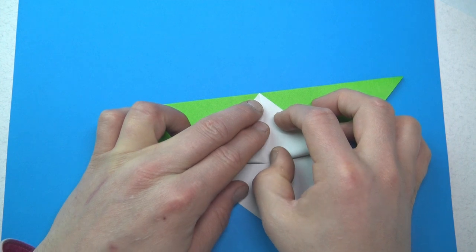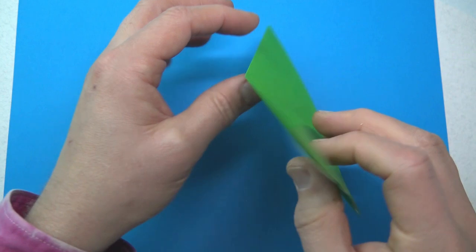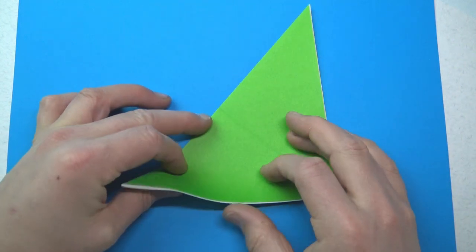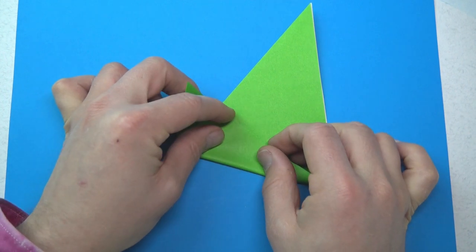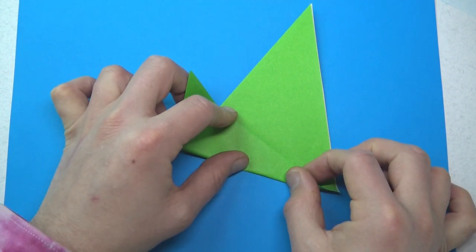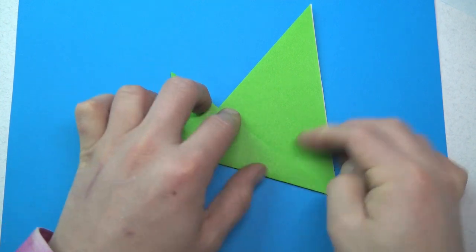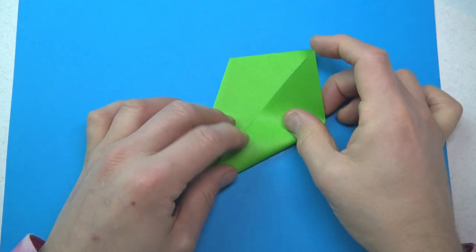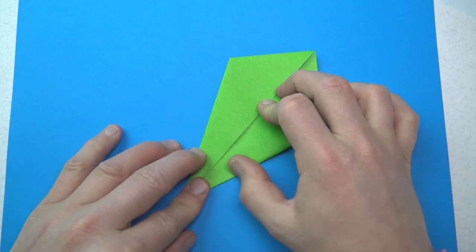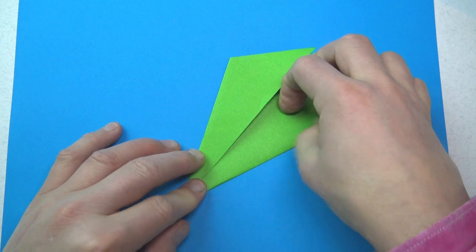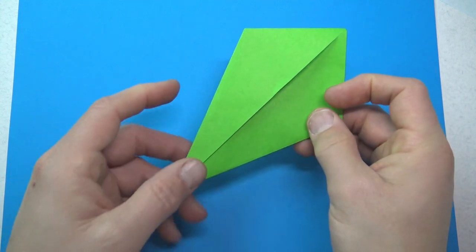Align and press in the middle. Unfold and turn over. And fold this edge to the crease. And repeat.